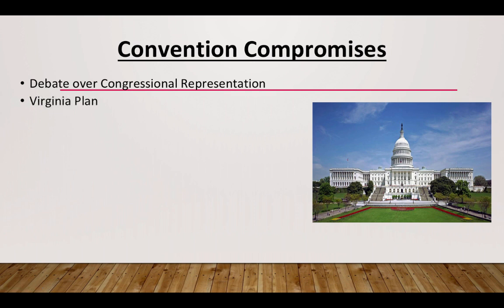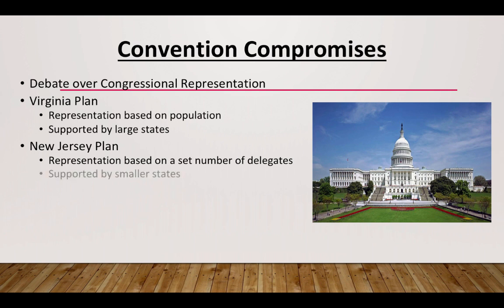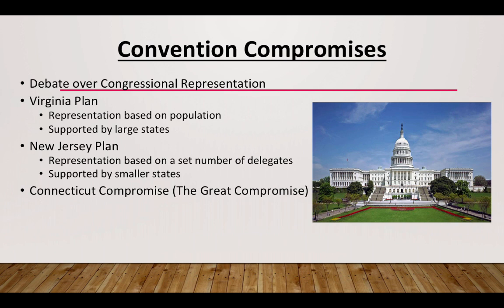Virginia's plan, led by James Madison, proposed that representation be based on population — this would favor large states because the more people a state has, the more representation they'd have. Small states opposed this. New Jersey introduced a plan where representation would be based on a set number of delegates — equal representation per state — supported by smaller states afraid of being outnumbered. The two sides came together in what's known as the Connecticut Compromise, or most commonly the Great Compromise, which created a bicameral legislature.